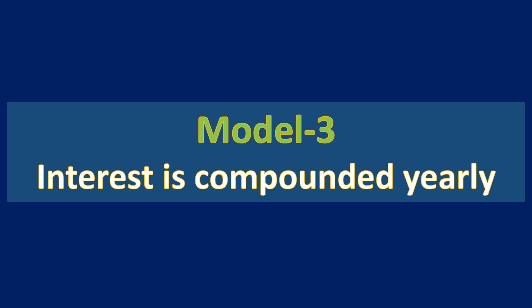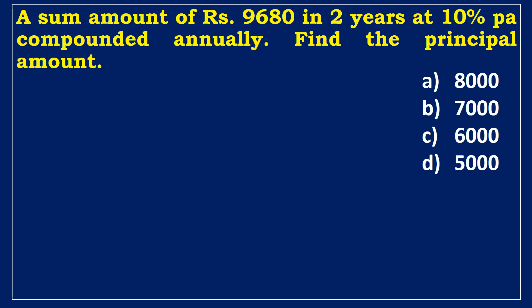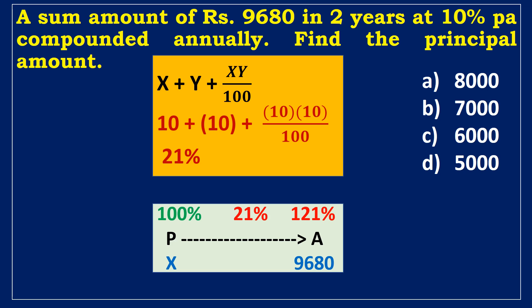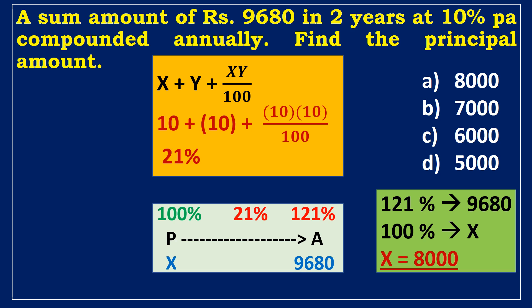Model 3: Interest is compounded yearly. A sum amounts to 9680 rupees in two years at 10% per annum compounded annually. Find the principal amount. Using effective percentage calculation, x + y + xy/100: 10 + 10 + (10×10)/100 = 21%. The CI rate for 10% in two years is 21%. Assuming principal is 100%, the amount is 121%. If 121% = 9680, then 100% = x. Cross-multiplying gives the principal as 8000 rupees.